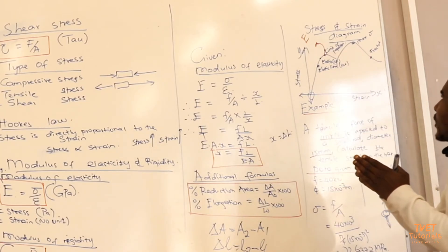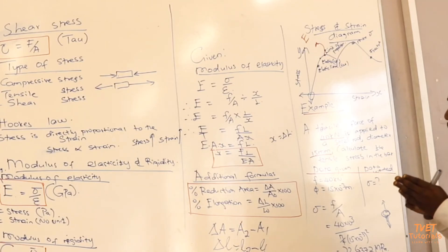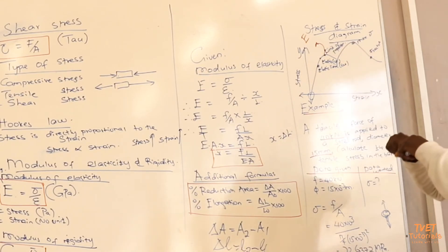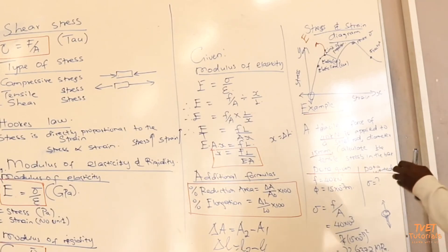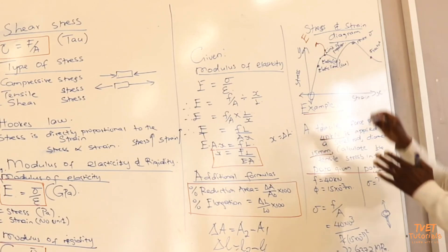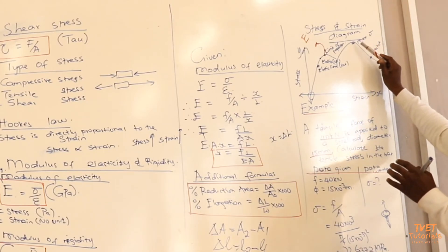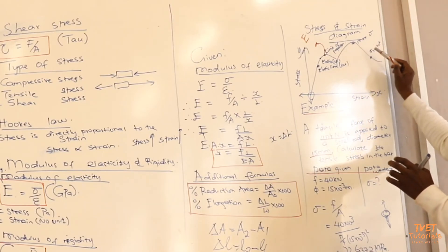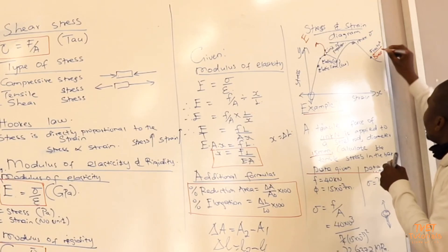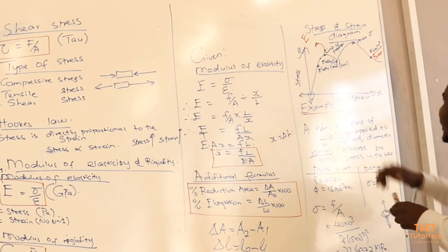At the limit of proportionality, you have applied a force on a specific object and it will return to its original shape — that is elasticity. If you apply the maximum force on the object beyond this point, this represents the maximum stress. At the fracture point, the object breaks. This is the stress-strain diagram that you have to be familiar with.